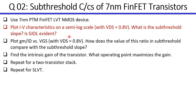So let's go to the first part. We'll plot the ID characteristics on a semi-log scale, then we will extract the sub-threshold slope of the transistor, and we will see if there is GIDL or not. But before actually going to the simulator or to ADT, we need to see from our simple models and from our understanding of the operation of the transistor how we expect the transistor to behave.